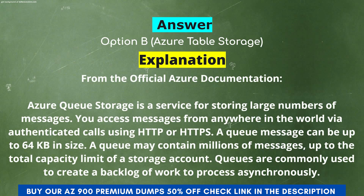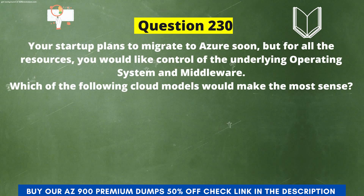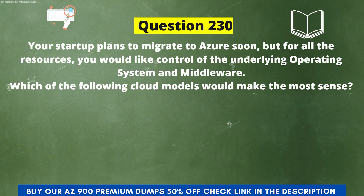Explanation: Azure Queue Storage is a service for storing large numbers of messages. You access messages from anywhere in the world via authenticated calls using HTTP or HTTPS. A queue message can be up to 64 KB in size, and a queue may contain millions of messages up to the total capacity limit of a storage account. Queues are commonly used to create a backlog of work to process asynchronously.